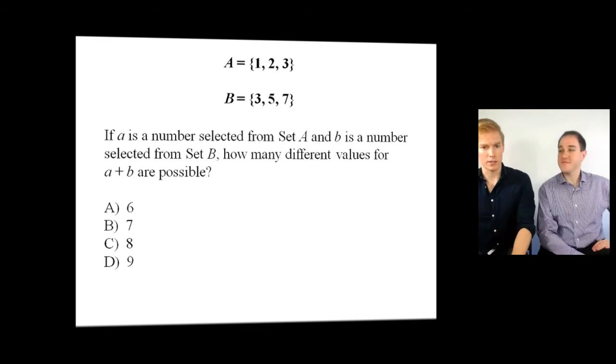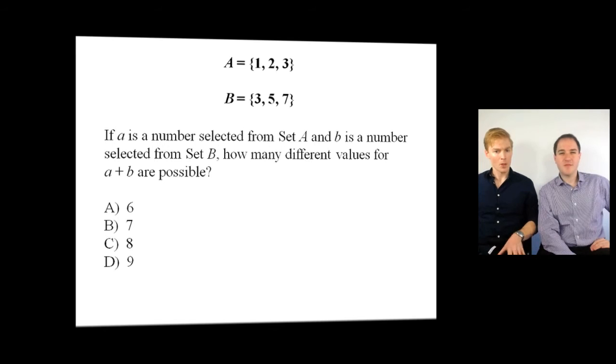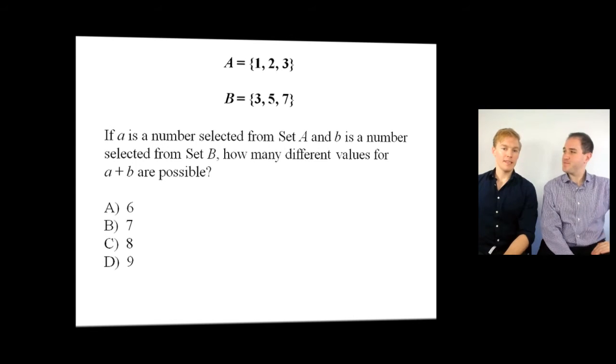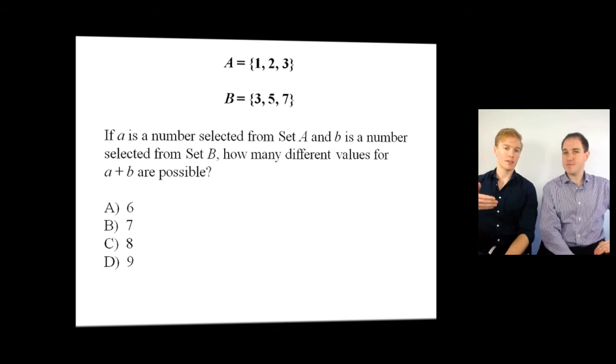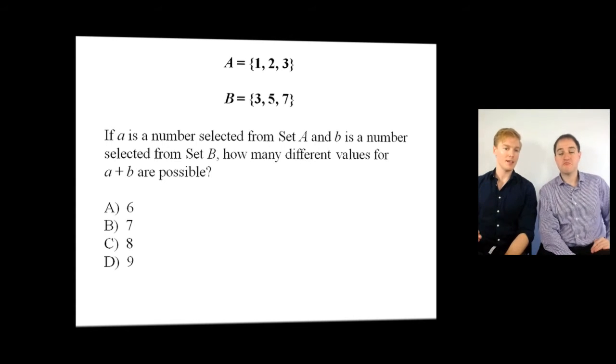Alright, student Kyle is looking hard at this one. So, we've got two sets here. If A is a number selected from set A, and B is a number selected from set B, how many different values for A plus B are possible? How are you going to do this one, Kyle? I think, okay, I think maybe, since I have 3 and 3, I'm just going to multiply to get 9.